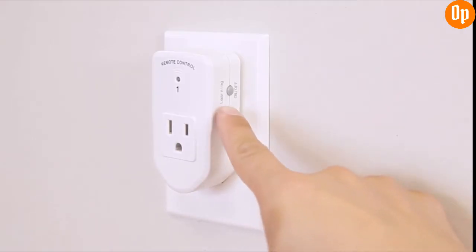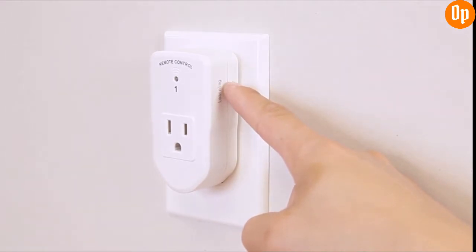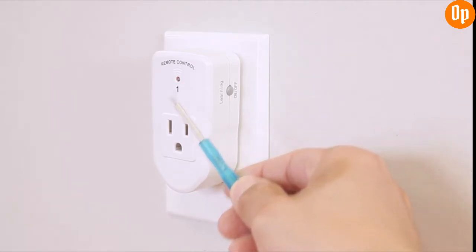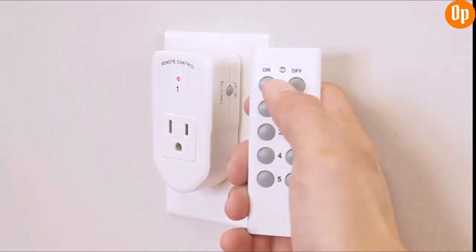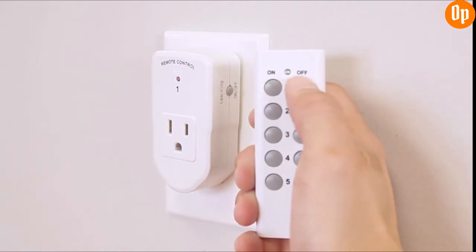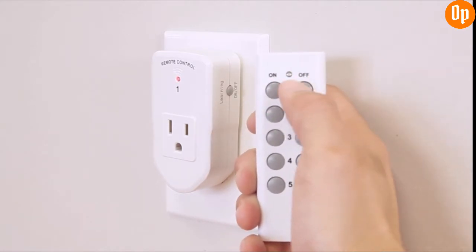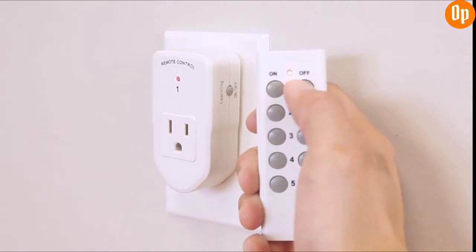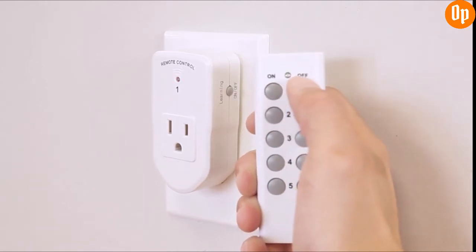To reprogram the transmitter while the remote control socket is plugged in, press and hold the learning button for five seconds until the LED light flashes. Release the learning button and press the preferred on or off button of the remote control. Programming is now successful when the LED stops flashing.